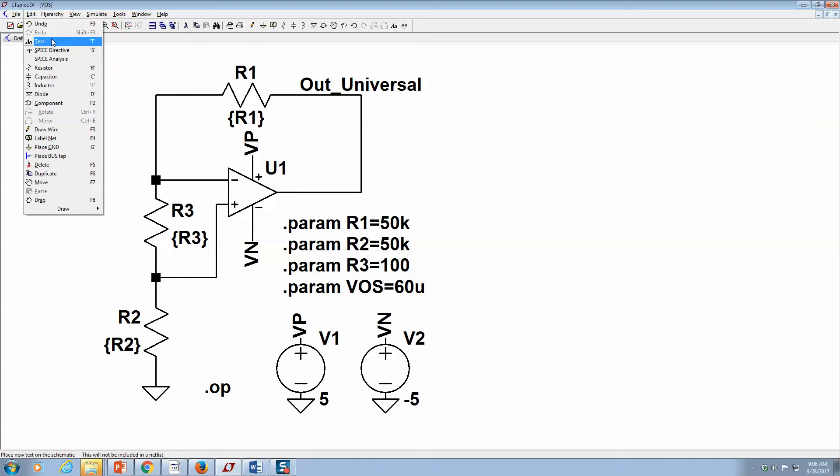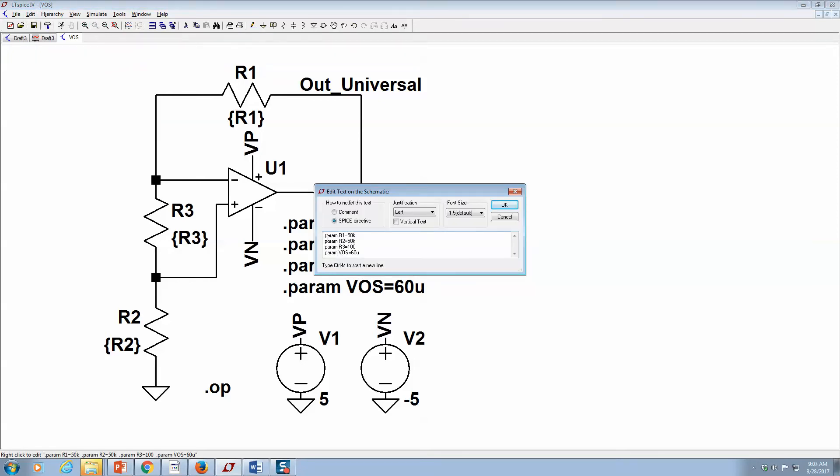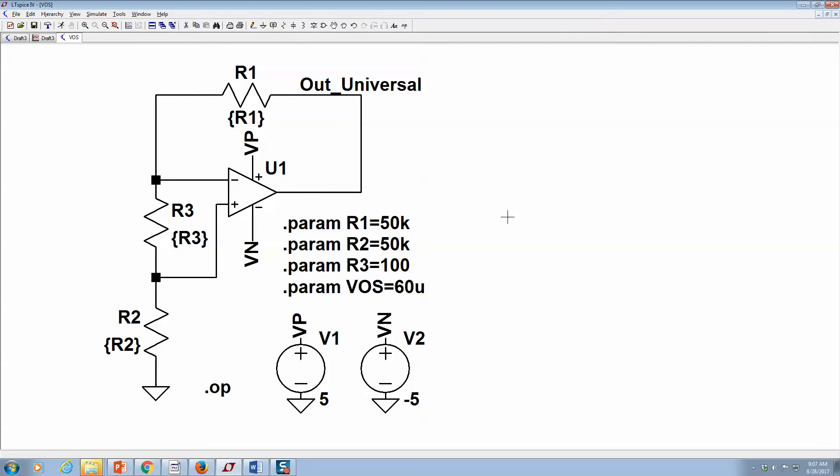I would have inserted a SPICE directive and then typed out these commands: dot param something equals something. You've got to do Control-M to start a new line. You can see up here brackets are one, brackets are three, brackets are two. I've got the power supply set up and it's a DC operation. We'll just do run.